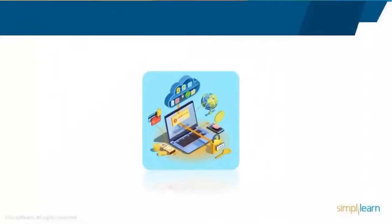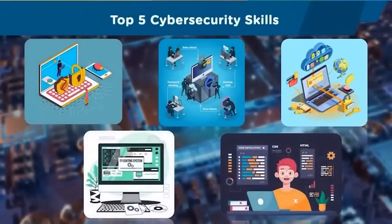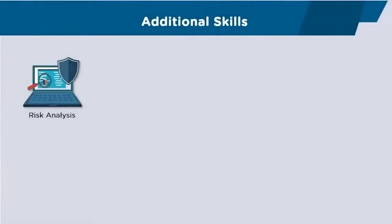Fifth skill: Cloud Security. There is a growing demand for cybersecurity professionals with cloud security skills. Companies seek professionals with security skills applicable to public and hybrid cloud platforms such as Amazon Web Services and Azure. More organizations are moving to cloud infrastructure to store data and run applications. Cloud security involves implementing policies and technologies that protect cloud-based systems. Companies want professionals who can manage cloud security tools to identify and prevent cloud breaches. People with experience in Microsoft Azure, AWS, and GCP are in high demand. To become a successful cybersecurity expert, you must possess a rich and diverse skillset.